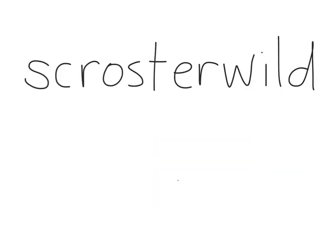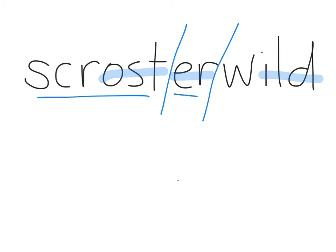Up for a challenge? Try breaking apart these nonsense words and figuring out what they say. Do you see 'ost,' 'ur,' and 'ild' in the first word? Break apart after the 'ost' and before the 'ild.' Scrost-ur-wild — scrost-er-wild.